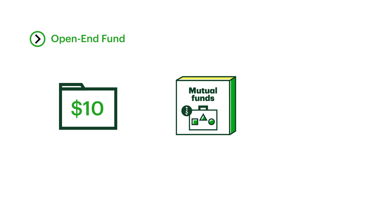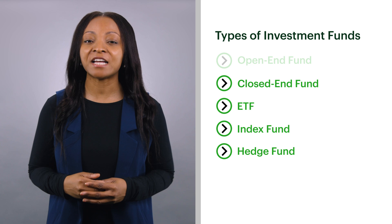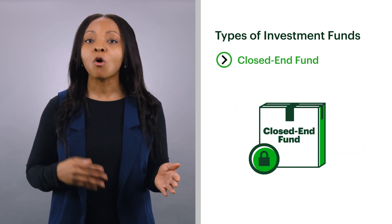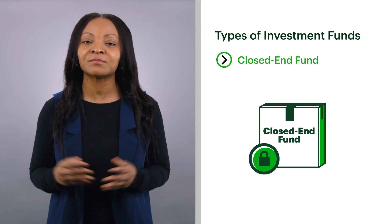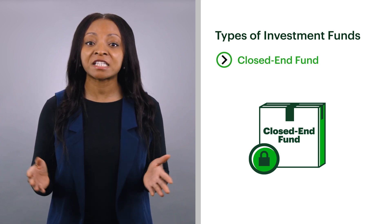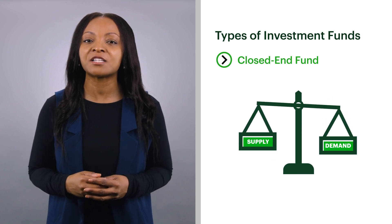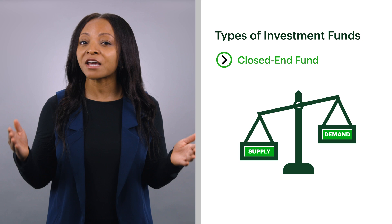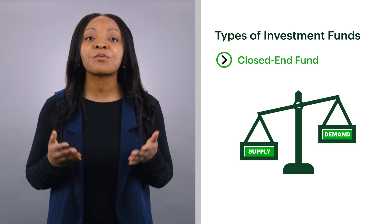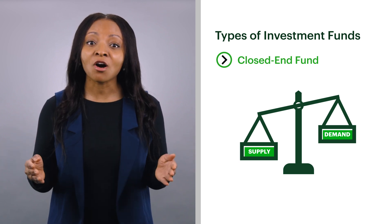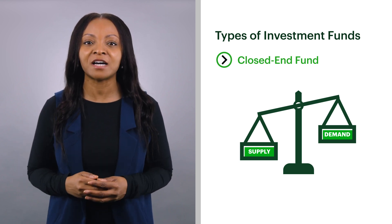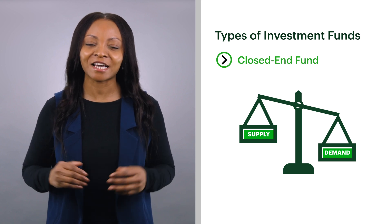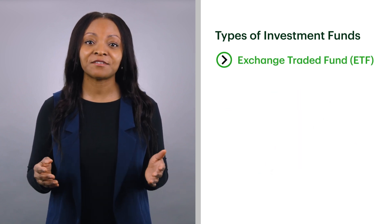A common type of open-end fund is a mutual fund, which we'll discuss in more detail in another lesson. Closed-end fund: a closed-end fund issues a fixed number of shares privately or in an initial public offering, or IPO. Because the number of shares created is fixed, supply and demand influence the price of each share. If the demand for buying shares of the fund is higher than the supply of selling shares, then the price of the share will go up, causing the shares to trade at a premium to the NAV of the fund. The opposite can occur as well, causing the shares to trade at a discount.